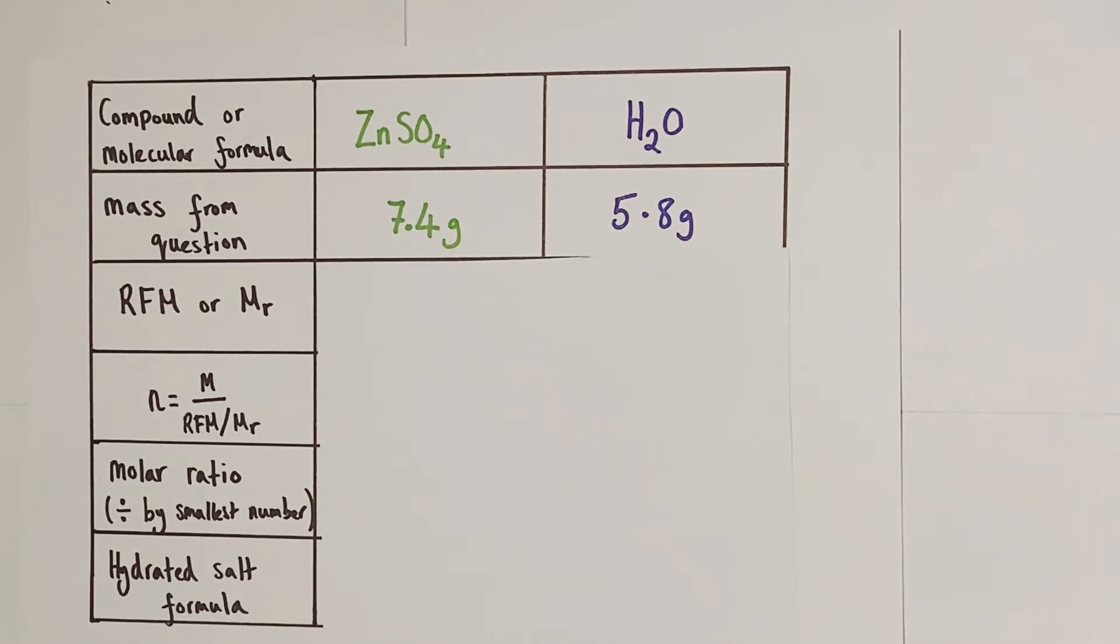At this point we want to calculate the relative masses of the zinc sulfate and the water. So we're going to work out the relative formula mass of zinc sulfate because it's an ionic compound and the molecular mass of water because it's a covalently bonded molecule. But the process here is exactly the same. We're going to add together the relative masses of the constituent atoms of different elements that make up the molecule or compound involved.